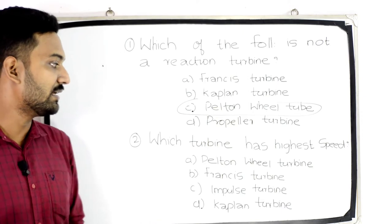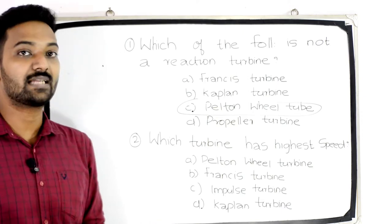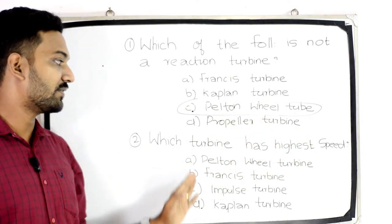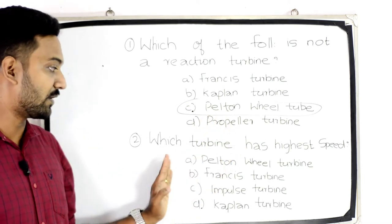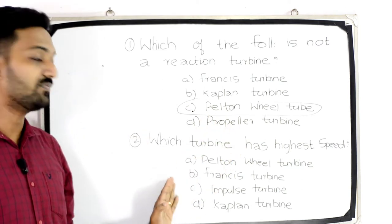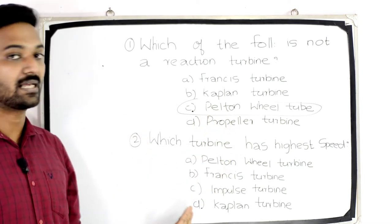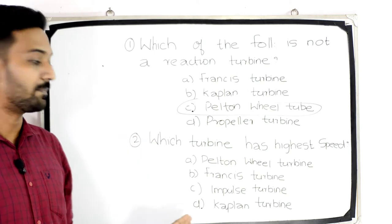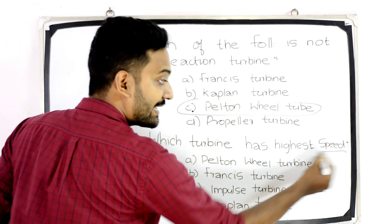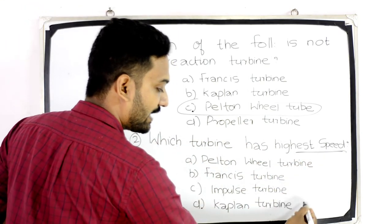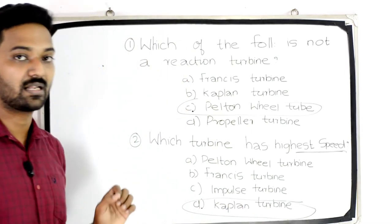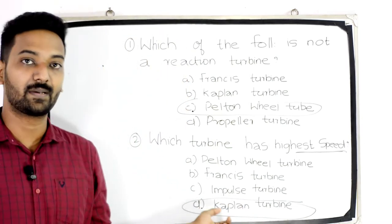The next question is: which turbine has the highest speed? Options: Pelton wheel turbine, Francis turbine, impulse turbine, and Kaplan turbine. The answer is Kaplan turbine — it has the highest speed.